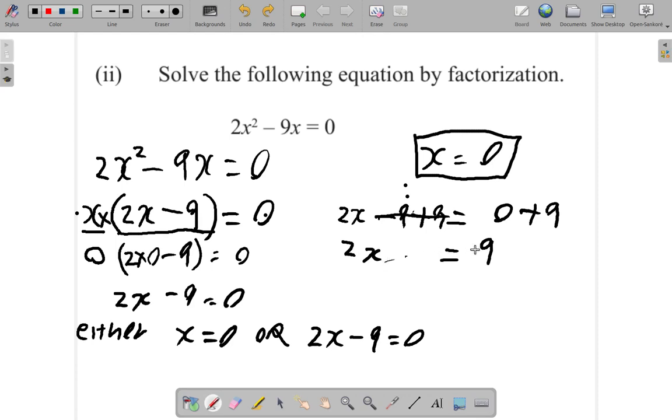Now, 2 times x is equal to 9. 2 times which number gives you 9? Or, if you don't want to think of it that way, if you have 2 times x is equal to 9, get rid of the 2. And say, let's do it separately. 2x is equal to 9. 9 divided by 2.